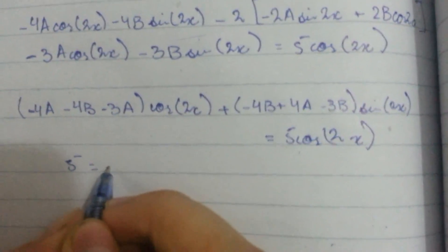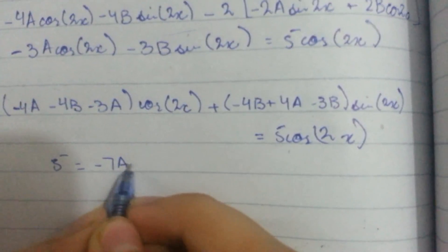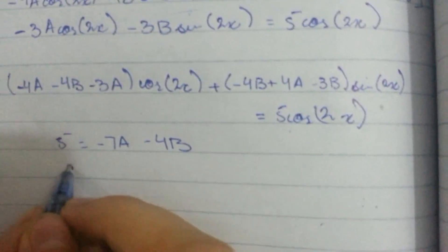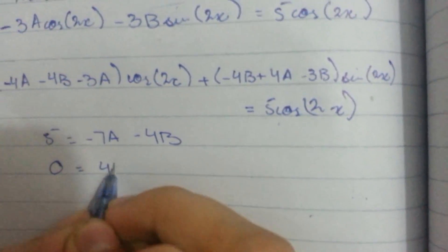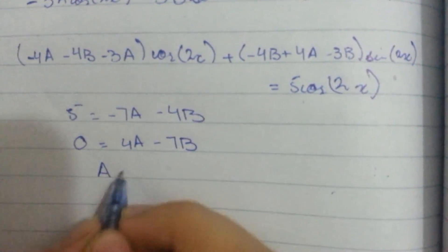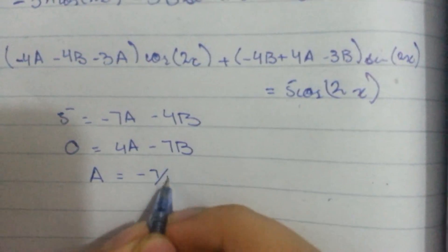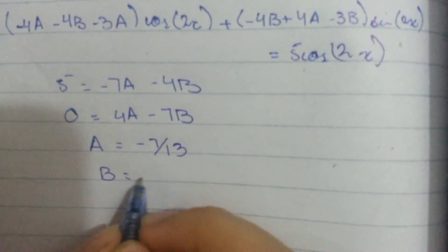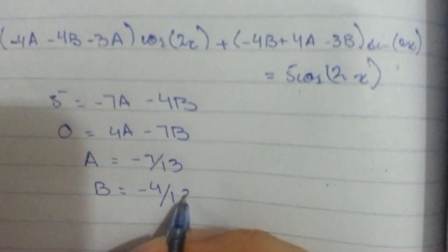5 is equal to minus 7A minus 4B and 0 is equal to 4A minus 7B. So the answer for A is minus 7 by 13 and B is minus 4 by 13.